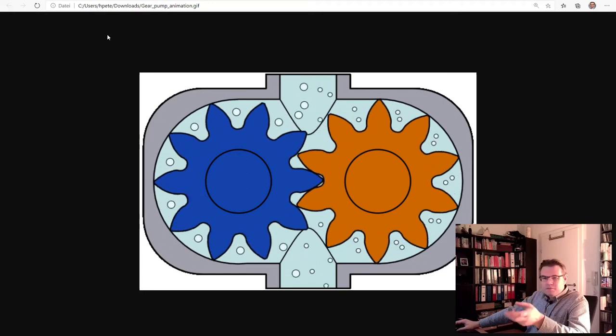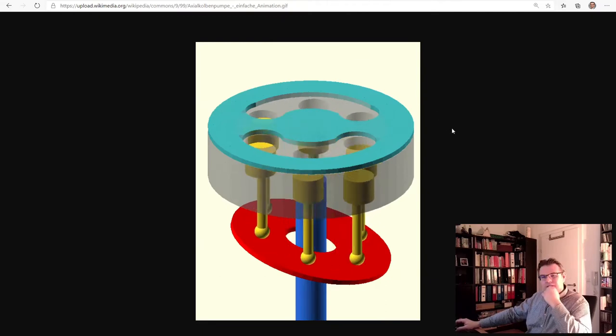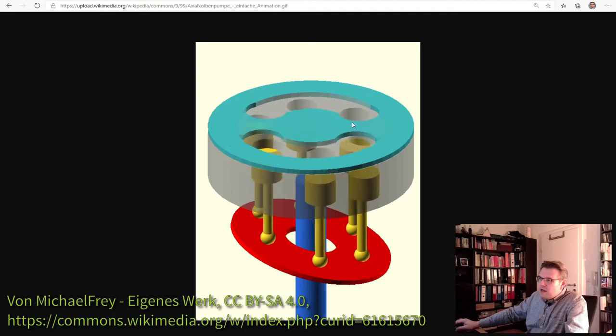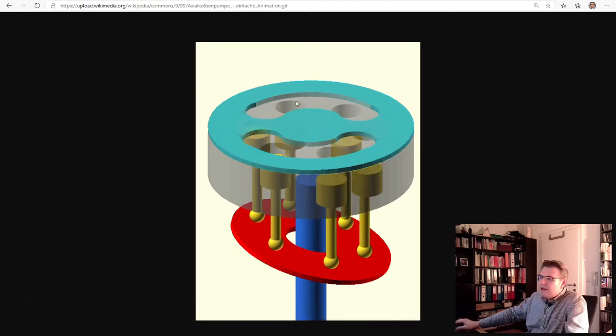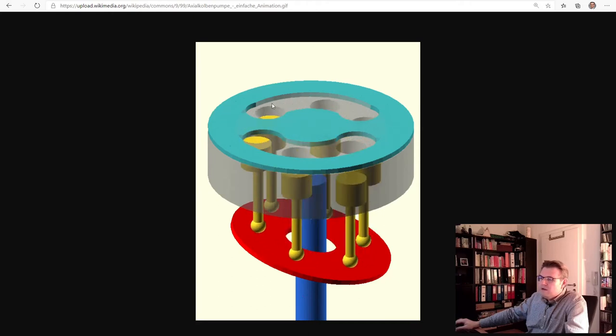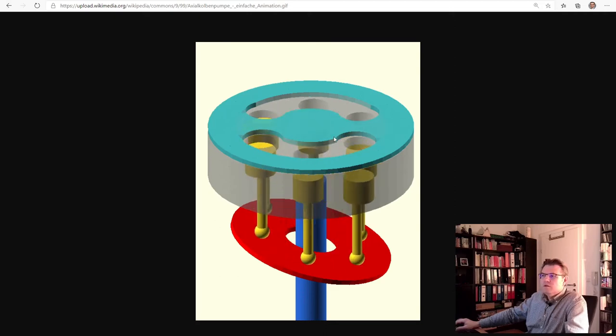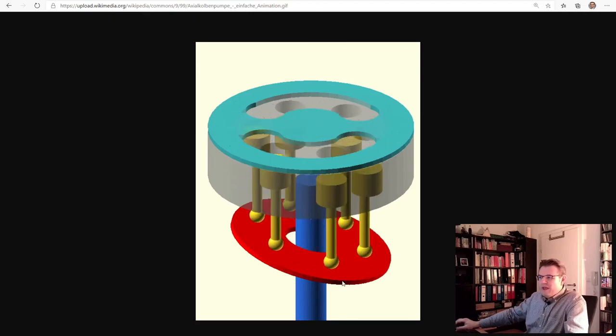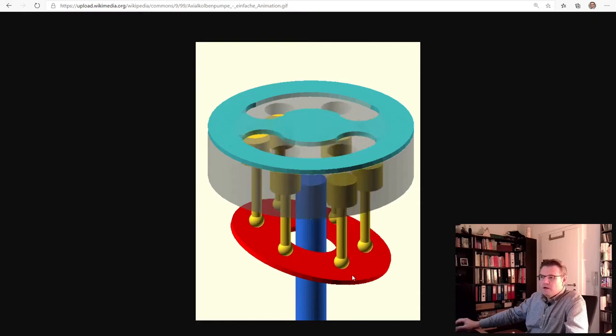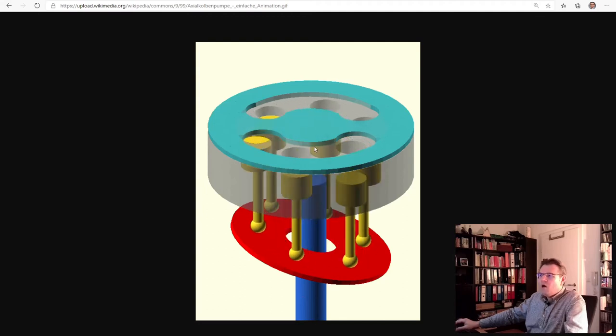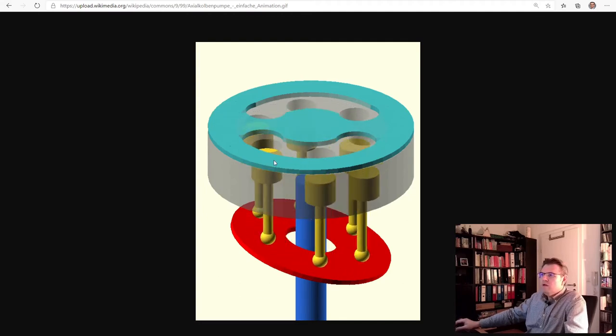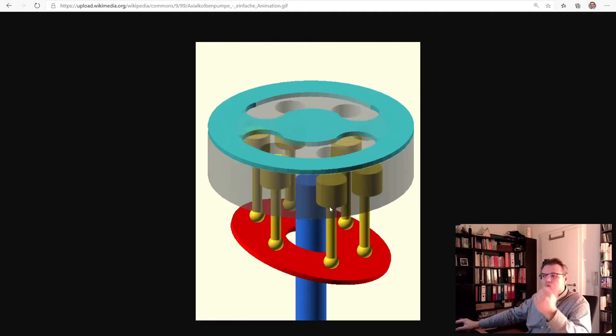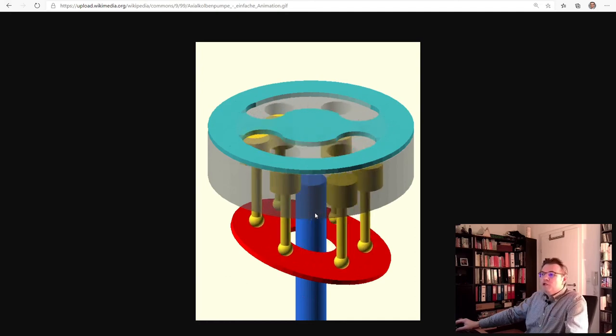However, there are also pumps out there where the displacement can be adjusted. Can be adjusted this displacement. One example is the axial piston pump. Looking like this. This is animation. Here is the suction side. Here those pistons are sucking inside the liquid. This is the entry. And here is the exit. And here they are pushing out the liquid. That's the sucking side, the suction side, the pressure side. And with the angle of this sheet, of this washer here, I can adjust how much is the displacement. If it's in 90 degree, there is no displacement at all. Just shift around the liquid. So there are constructions which can be adjusted.